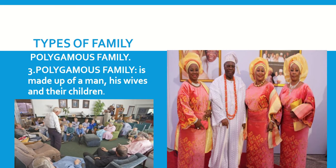Polygamous family is made up of a man, his wives, and their children. Children, you can see the picture from the screen.